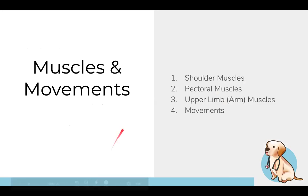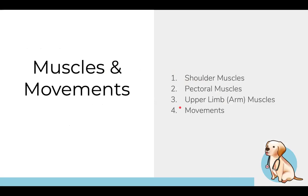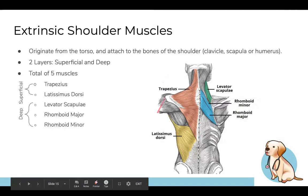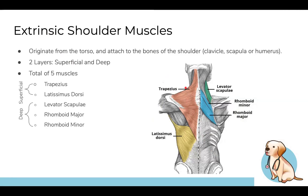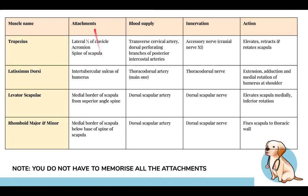Moving on to muscles and movements. Shoulder muscles are divided into three groups: shoulder muscles (including back), pectoral muscles (front chest), and upper limb or arm muscles. Shoulder muscles are split into extrinsic and intrinsic. Extrinsic muscles originate from the torso and attach to the clavicle, scapula, or humerus. The superficial layer includes trapezius and latissimus dorsi. The deep layer includes levator scapulae, rhomboid minor, and rhomboid major.